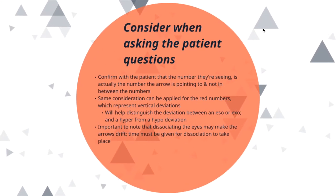When asking the patient questions, make sure to consider the following: Because the white numbers on the Maddox wing are separated into even numbers depicting exo deviations and odd numbers depicting eso deviations, it is important to confirm with the patient what they are seeing — that is, the arrow they were asked about is pointing to a number specifically and not at the gap between the numbers. The same applies for the red numbers, where even numbers depict hyper deviations and odd numbers depict hypo deviations. This is important to distinguish between an eso and an exo deviation, and between a hyper and a hypo deviation. It is also important to note that dissociating the eyes may make the arrows drift; time must be given for dissociation to take place, and the number recorded is the one the arrow is mostly pointing to.